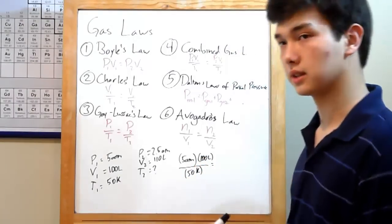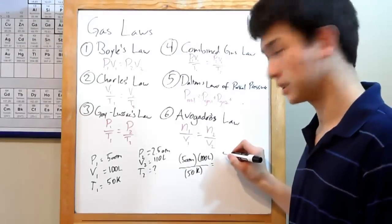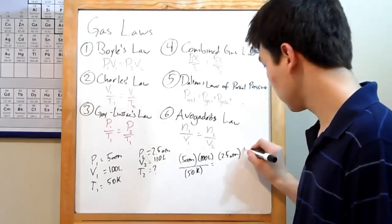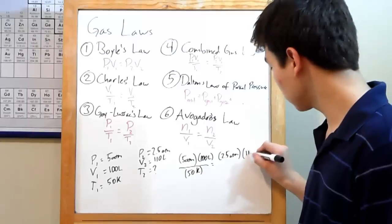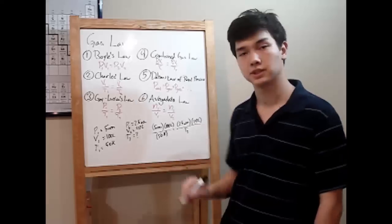And you set that equivalent to the other side, which is all the sub 2's. Your new pressure is 2.5 atmospheres, P2. Your new volume is 110 liters, V2. And you want to figure out what your new temperature is, T2.